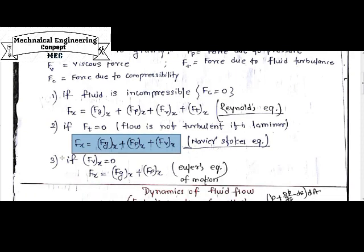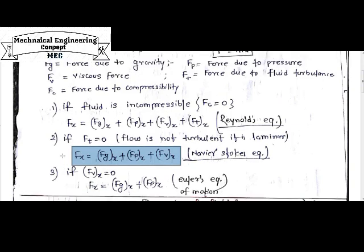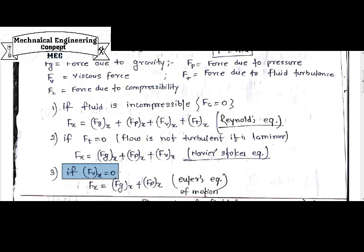Taking the equation further, when considering the fluid is non-viscous, the viscous force Fv is zero and the viscous effect is eliminated. The resultant equation will be Fx = Fgx + Fpx — gravitational force component plus pressure force component. This resultant equation is also known as Euler's equation of motion.